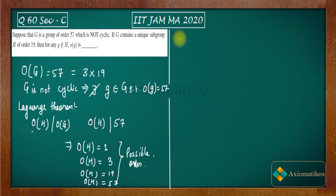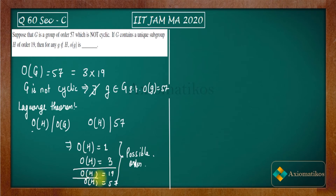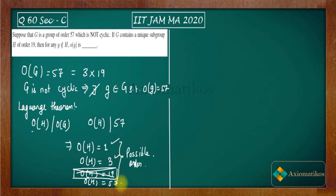The question says we have a subgroup H of order 19, and g is an element which is NOT inside H. They also specify that H is a unique subgroup of order 19, meaning there is no other subgroup of order 19.